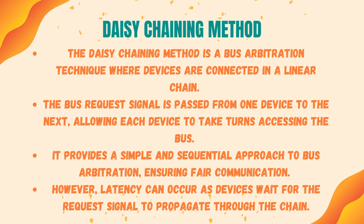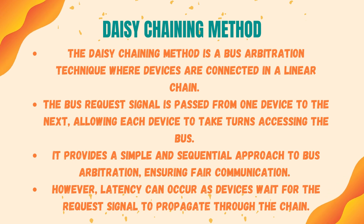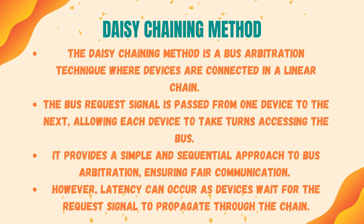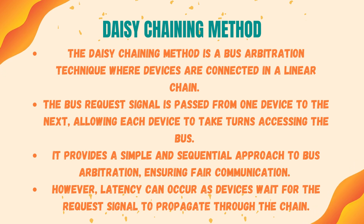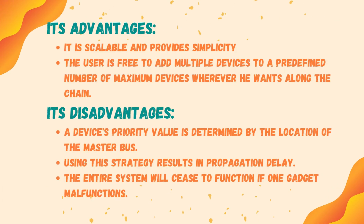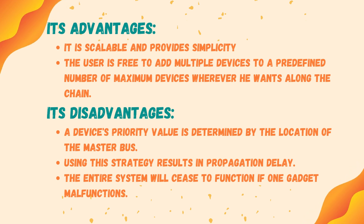The daisy chaining method is a bus arbitration technique where devices are connected in a linear chain. The bus request signal is passed from one device to the next, allowing each device to take turns accessing the bus. It provides a simple and sequential approach to bus arbitration, ensuring fair communication. However, latency can occur as devices wait for the request signal to propagate through the chain. Advantages include scalability and simplicity — the user is free to add multiple devices wherever they want along the chain.